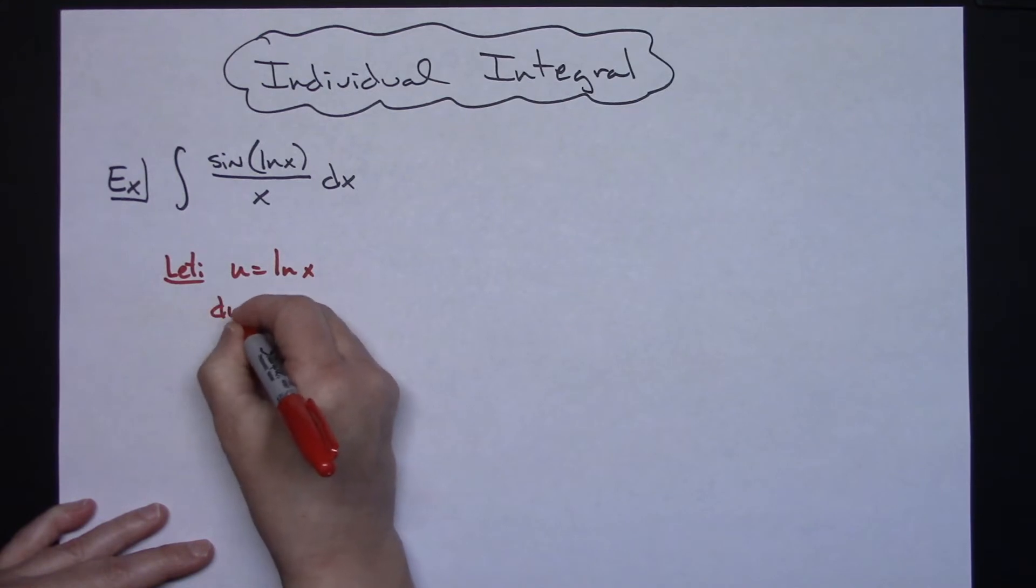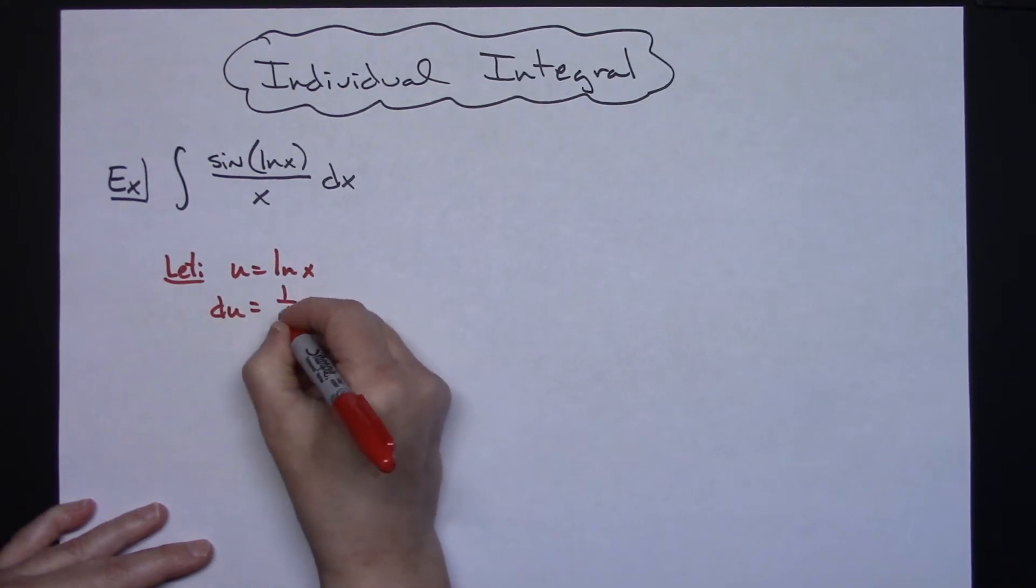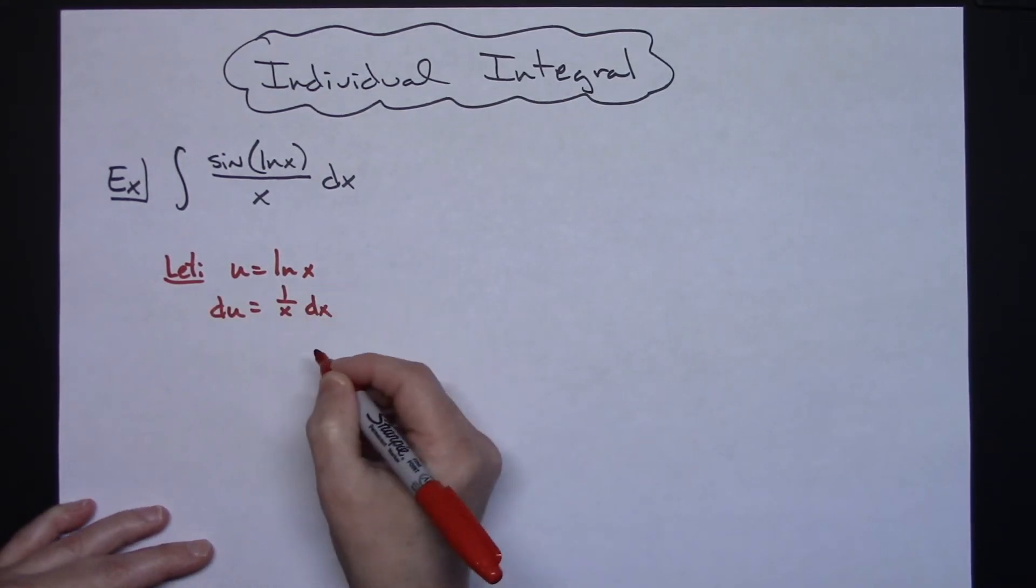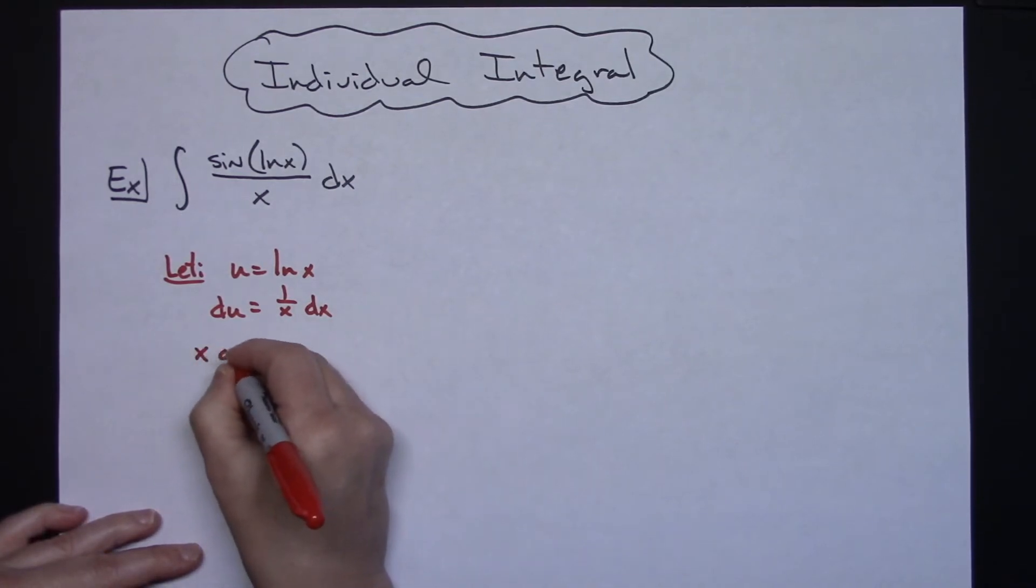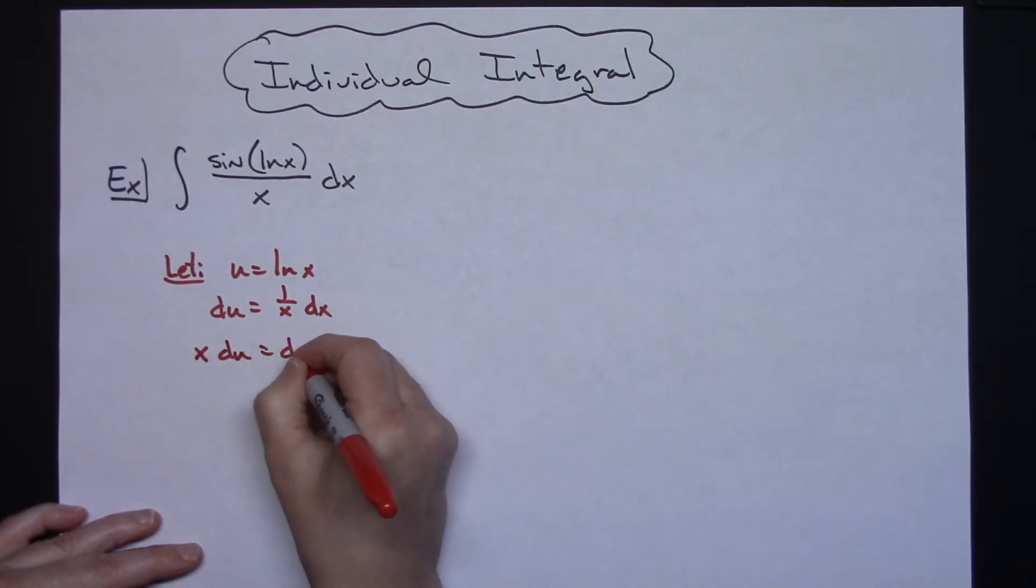We're going to take the derivative of both sides. du is equal to 1 over x dx, and then I'm going to go ahead and solve for dx. So I'll have x du is equal to my dx.